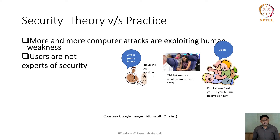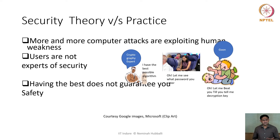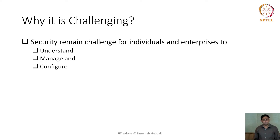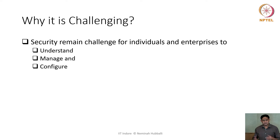Users are not security experts — they don't understand the implications of what can go wrong beneath the surface. Having the best algorithms or security mechanisms in place does not necessarily translate into the best safety. One reason is that security is hard to understand in the cyber and digital world. A large section of people don't understand the implications of what can go wrong unless they experience it themselves.